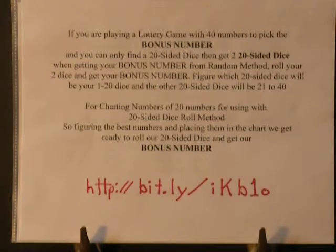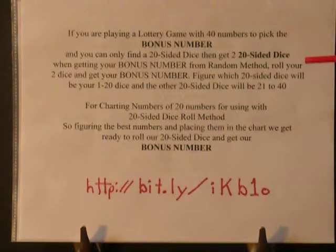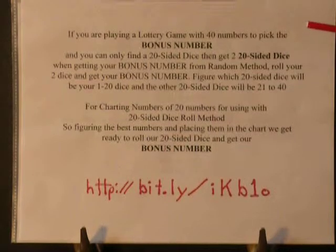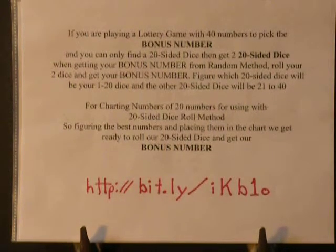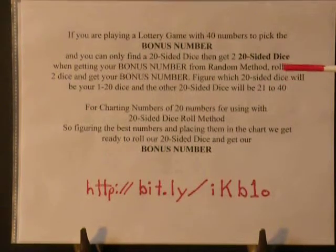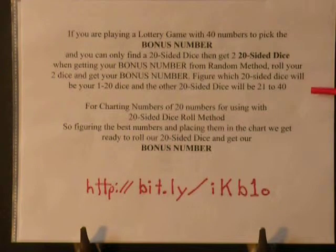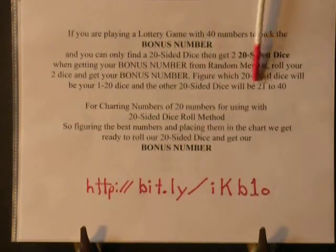If you are playing a lottery game with 40 numbers to pick the bonus number, you will only need to find a 20-sided dice. And if you can only find a 20-sided dice, get 2 of them. When getting your bonus number from the random method, roll your 2 dice. One 20-sided dice covers 1 to 20 — like a red one — and the other covers 21 to 40 — like a clear one.